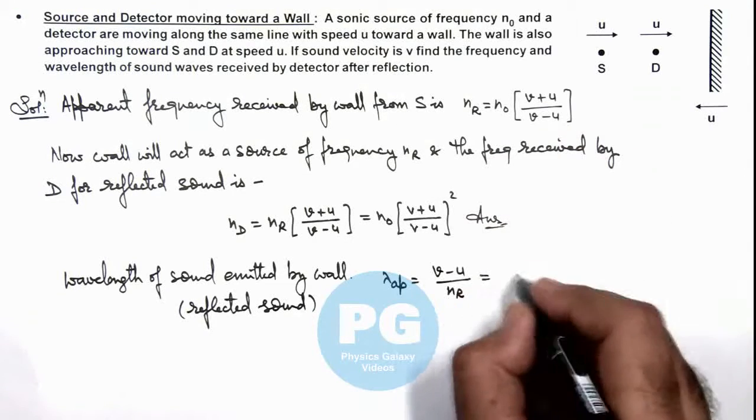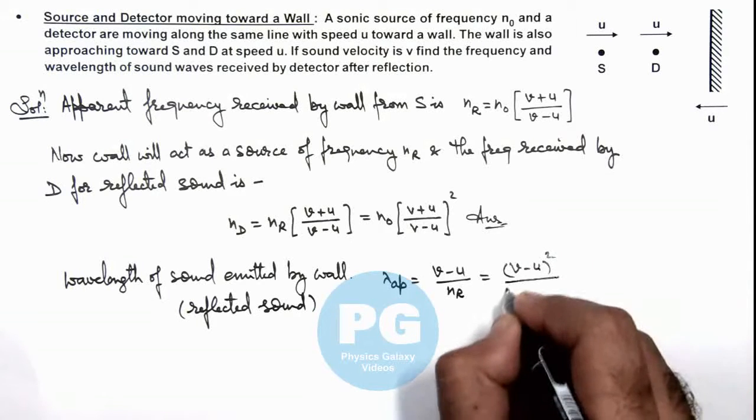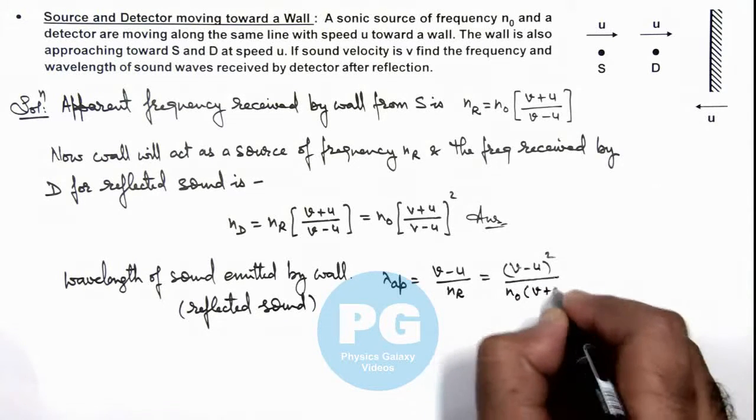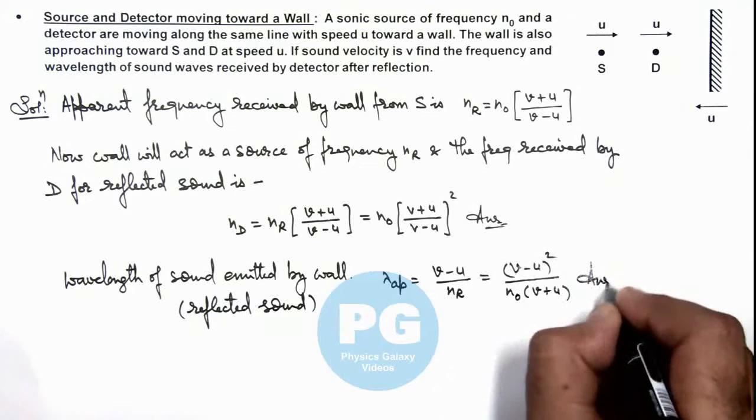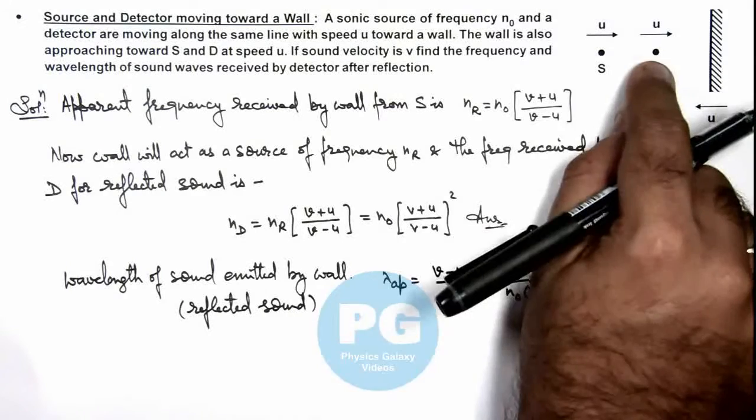Divided by n₀ times (v + u). This is the result of the wavelength of sound emitted by wall which is detected by the detector.